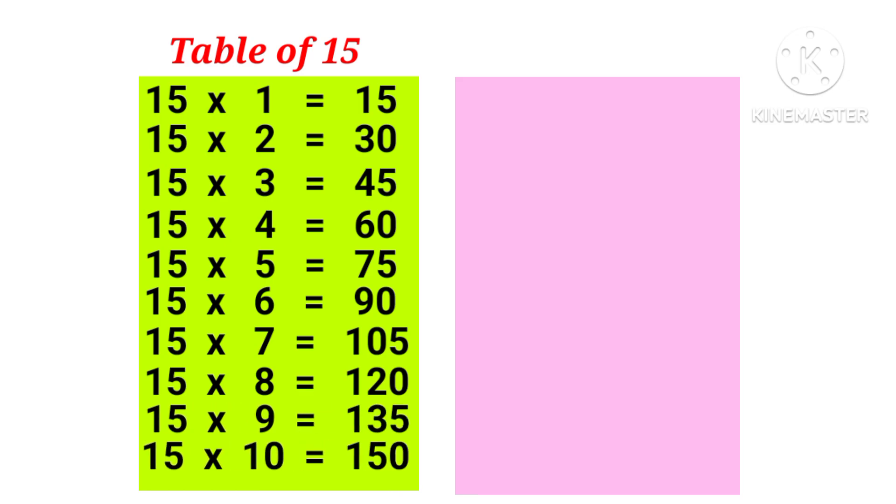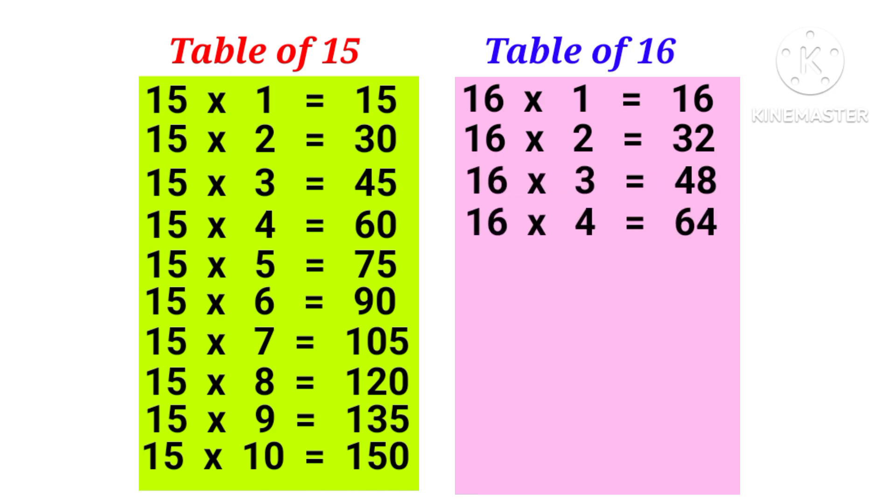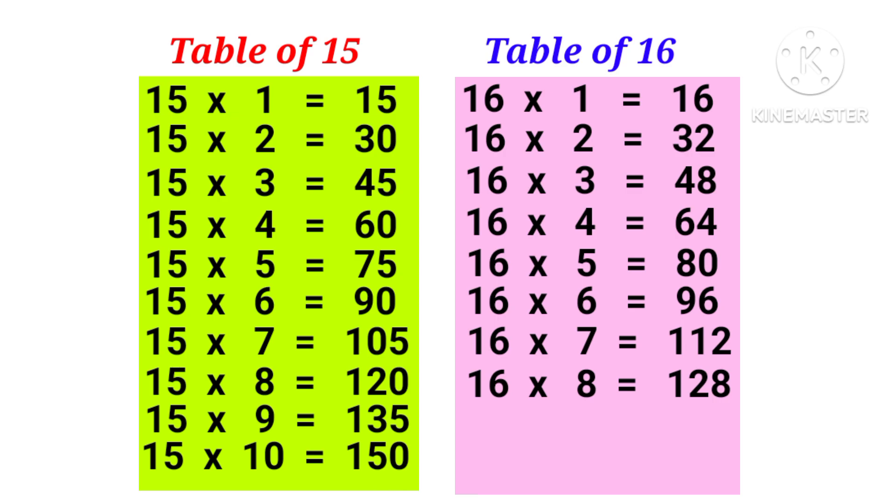15 10s are 150. 16 1s are 16, 16 2s are 32, 16 3s are 48, 16 4s are 64, 16 5s are 80, 16 6s are 96, 16 7s are 112, 16 8s are 128, 16 9s are 144, 16 10s are 160.